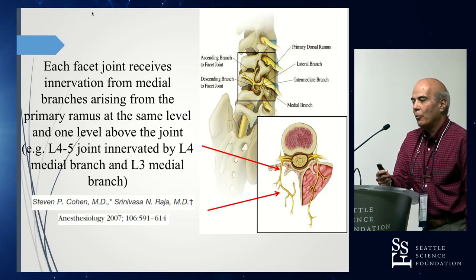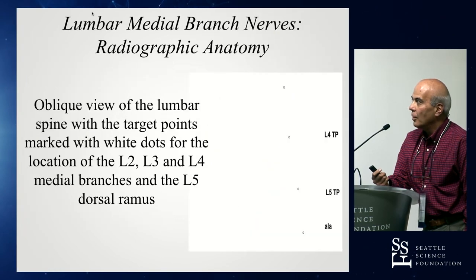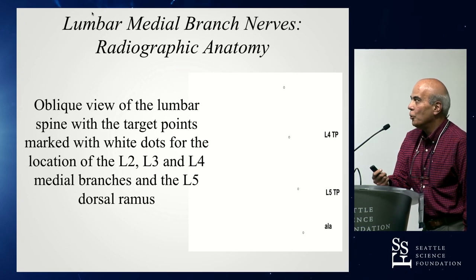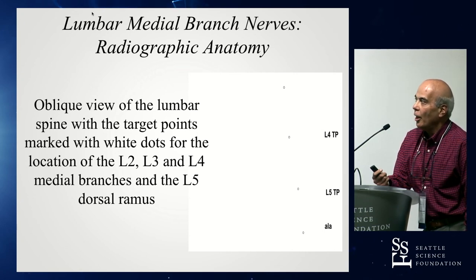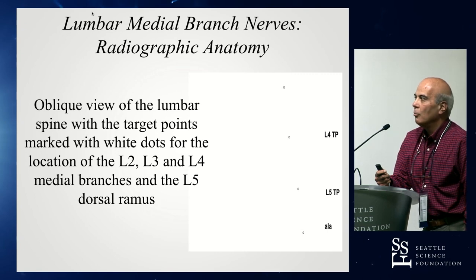For example, the L4-5 facet joint is innervated by the L3 medial branch nerve and the L4 medial branch nerve. This is supposed to be a picture showing the location targets for medial branch nerves at the L2, L3, L4, and L5 levels as well.